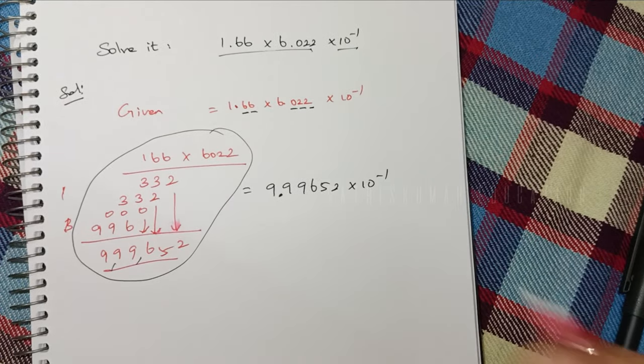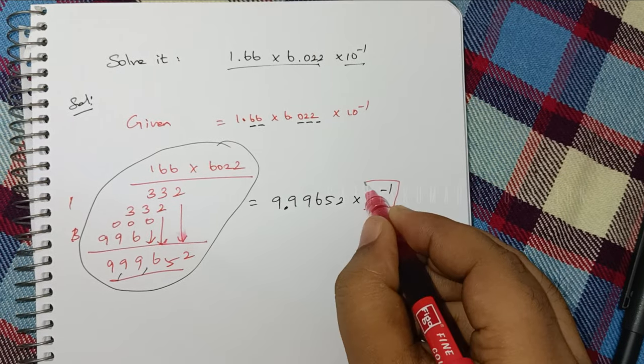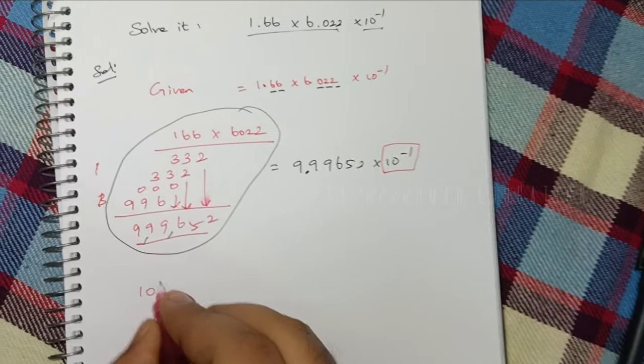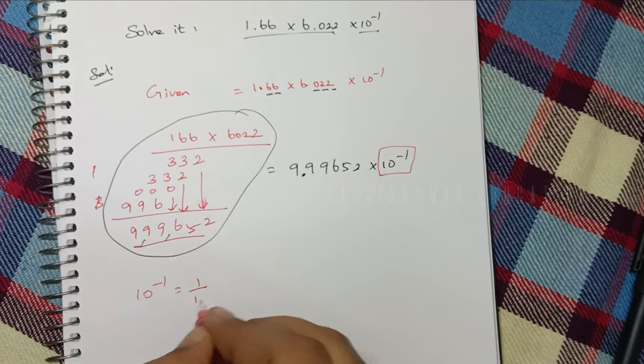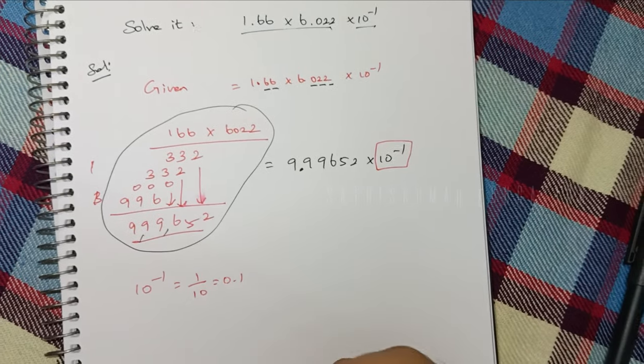If you convert 10 to the minus, 10^-1 is 1 by 10. So we get 0.1.